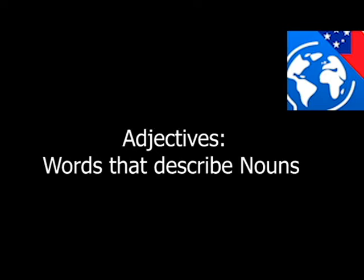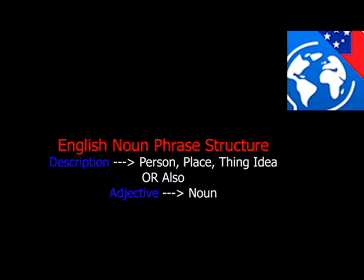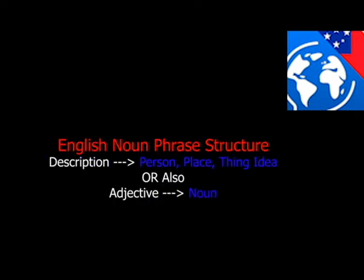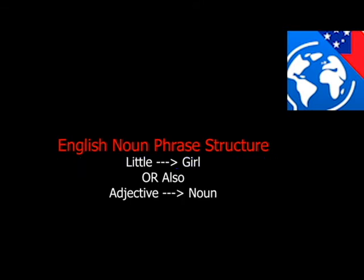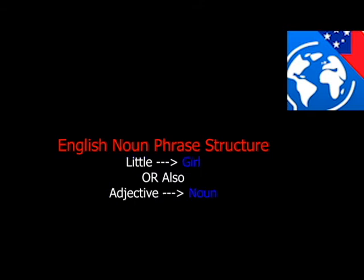In English, the structure is the description, then the person, place, or thing — the noun. For example, 'little girl.' The description or adjective is 'little,' then the person, place, or thing is 'the girl.'